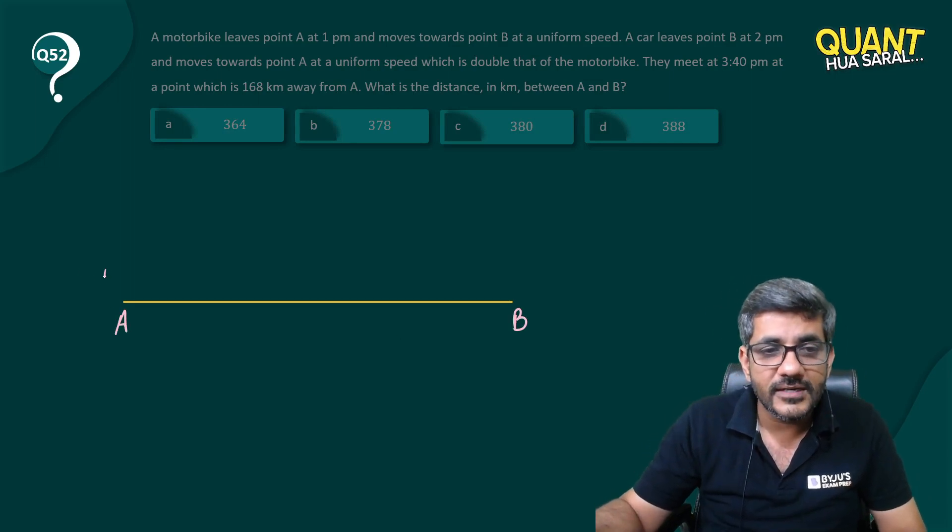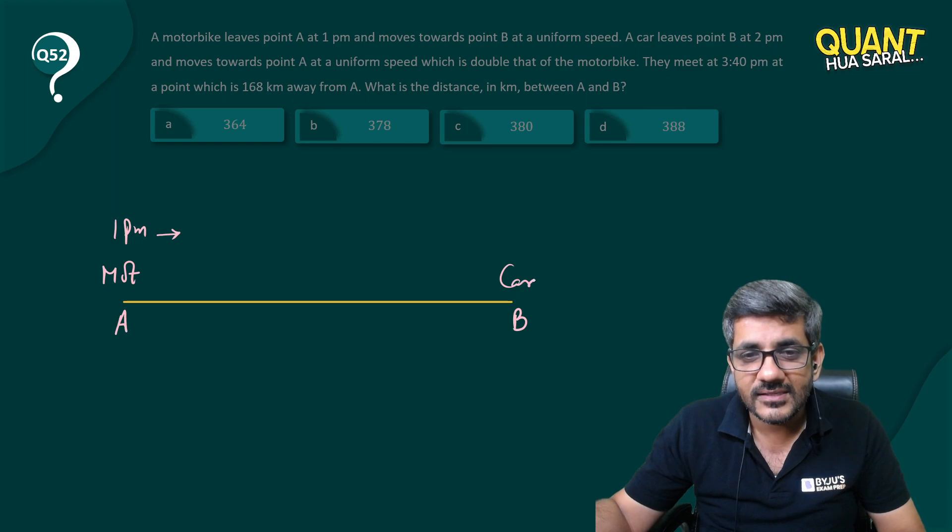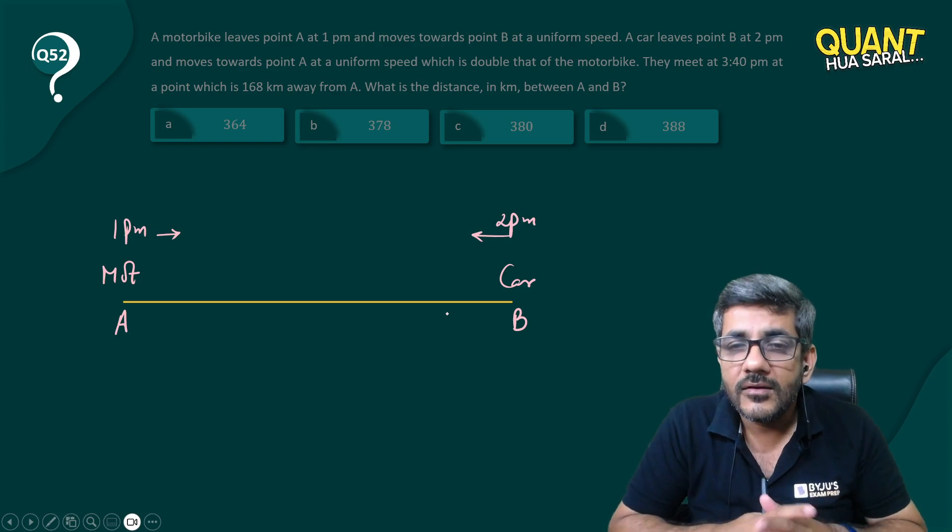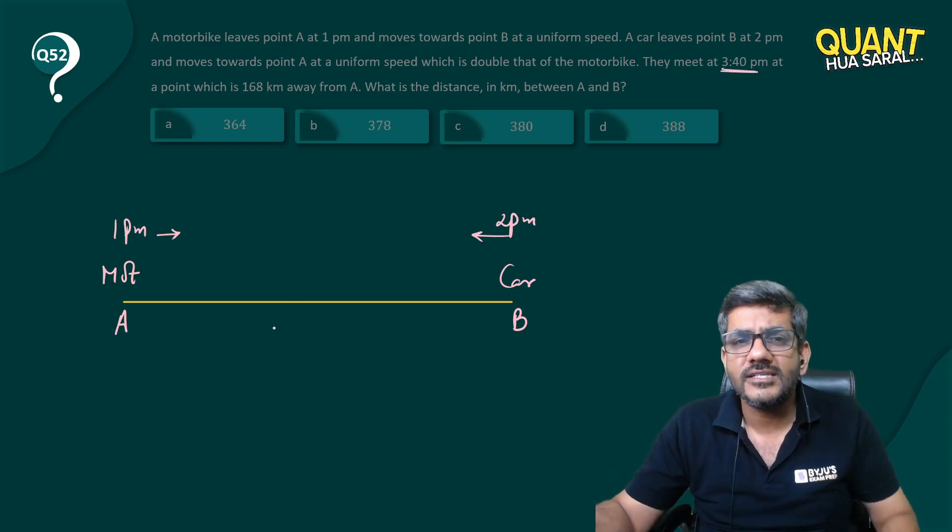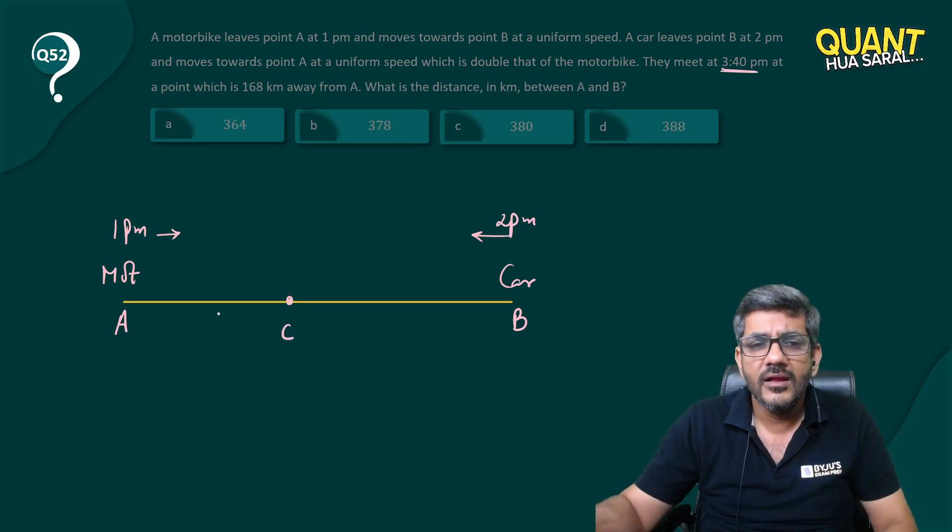From this point, the motorcycle starts at 1pm, and from that other point, the car starts at 2pm. They meet at 3:40 at a point 168 kilometers away from A. Let us say this is the point - let's call it C, which is at a distance of 168 kilometers.